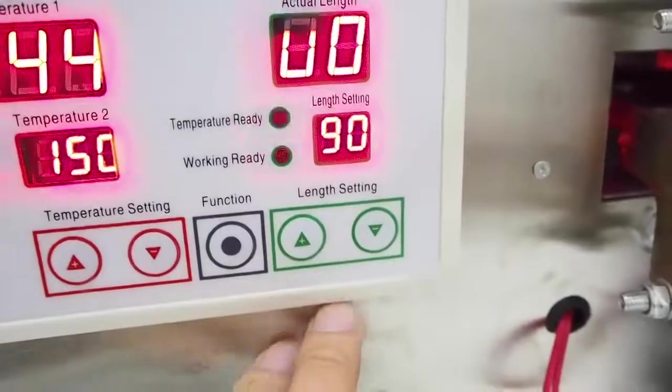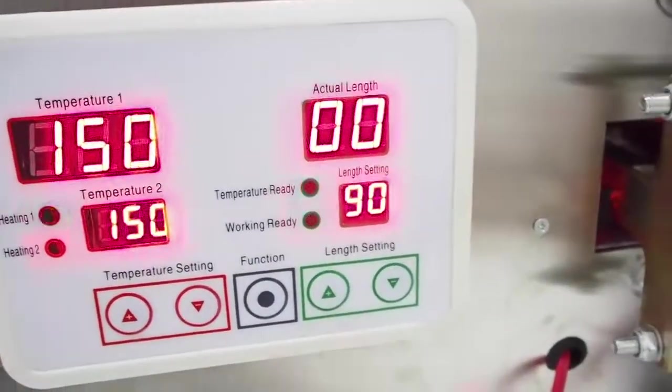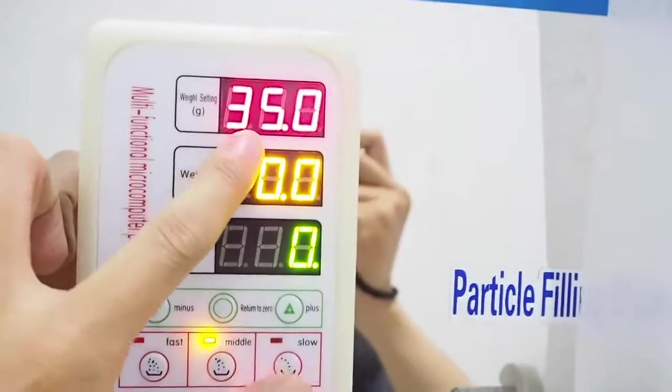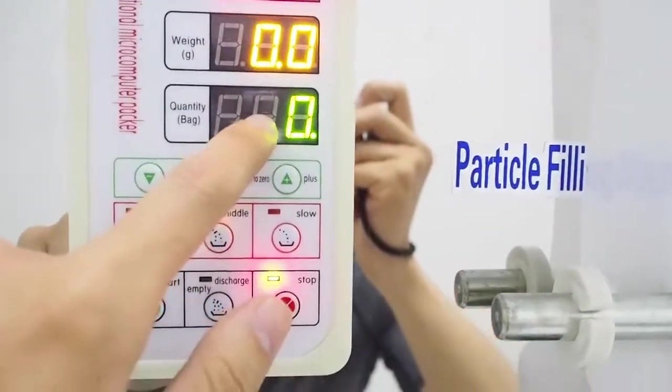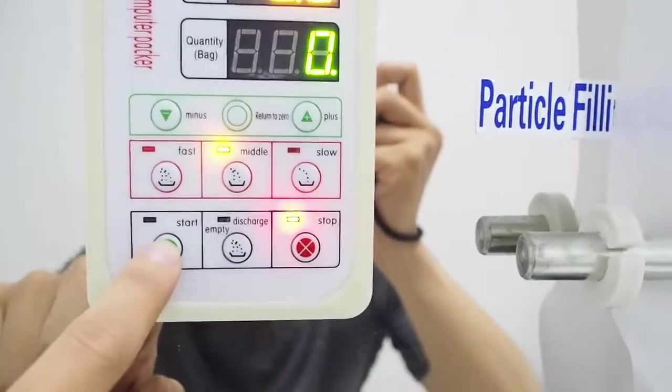The packing machine is now length set to 90 millimeter. Temperature ready. 35 grams each bag. Current weight is zero. Counter zero. Speed, medium. And start.